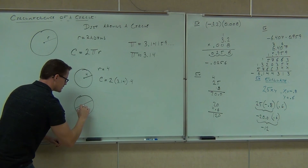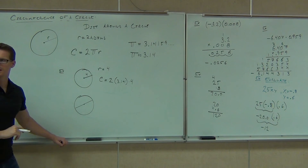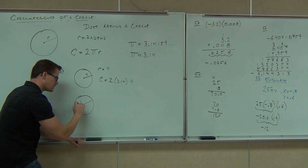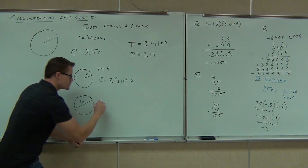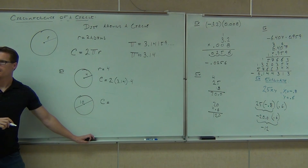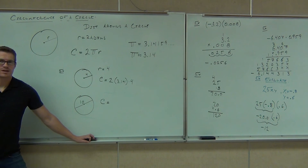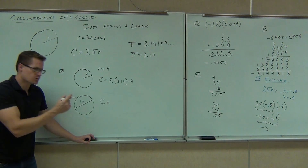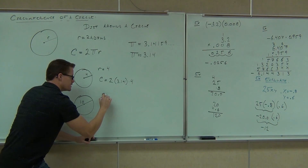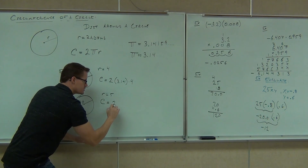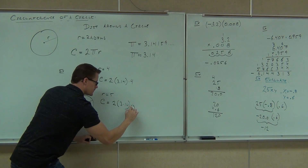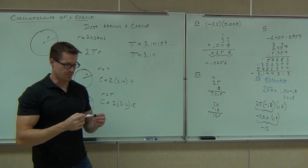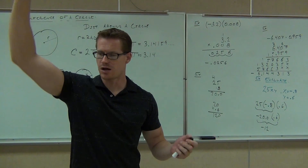One last example for today: what if the distance from edge to edge through the center is 10? Would you be able to find the circumference? Sure — the radius would be 5, because that's half. If I give you the full distance across, that's called the diameter. Half the diameter is the radius. So the radius here would be 5, not 10. You'd take 2 times 3.14 times 5 to find your circumference. Good job.